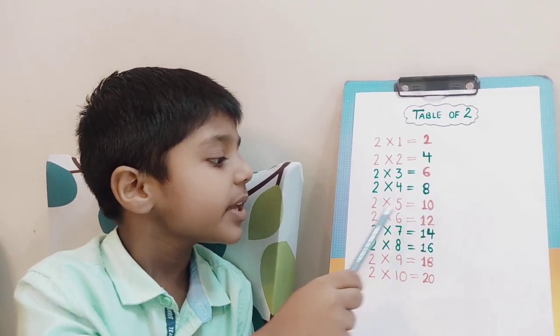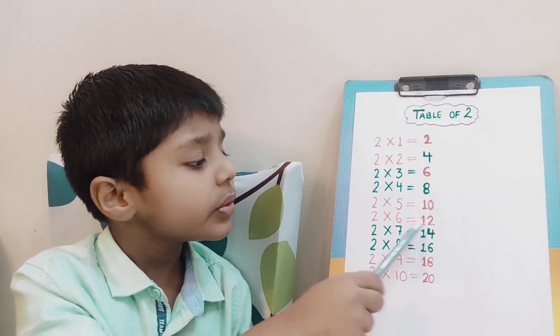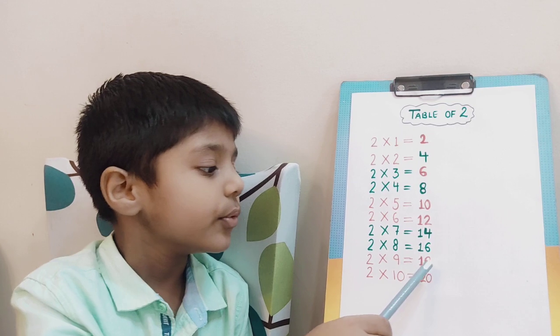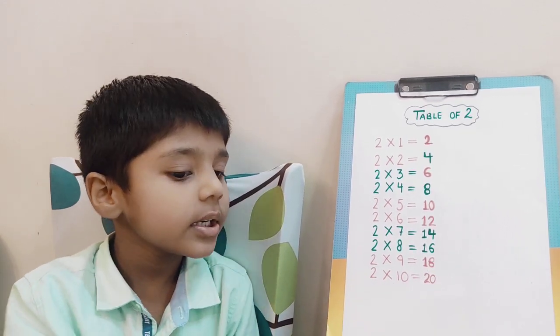2 fives are 10, 2 sixes are 12, 2 sevens are 14, 2 eights are 16, 2 nines are 18, 2 tens are 20.